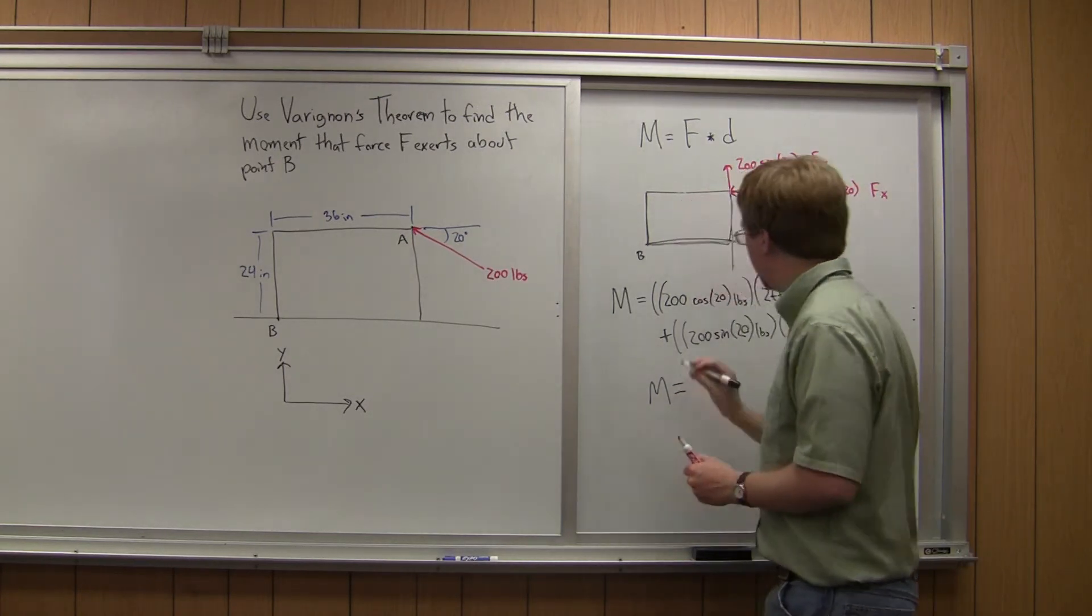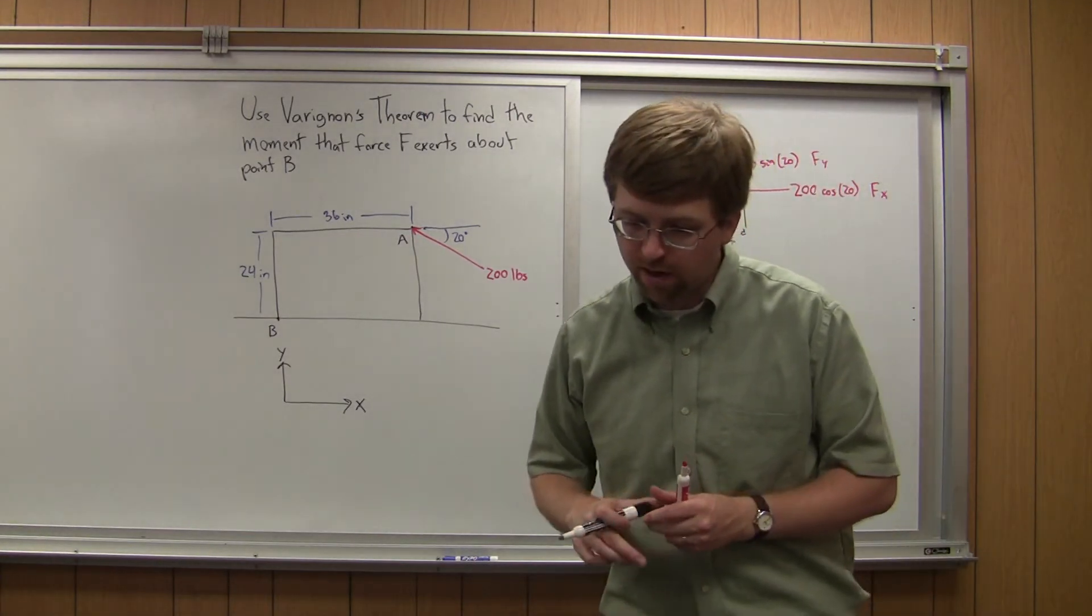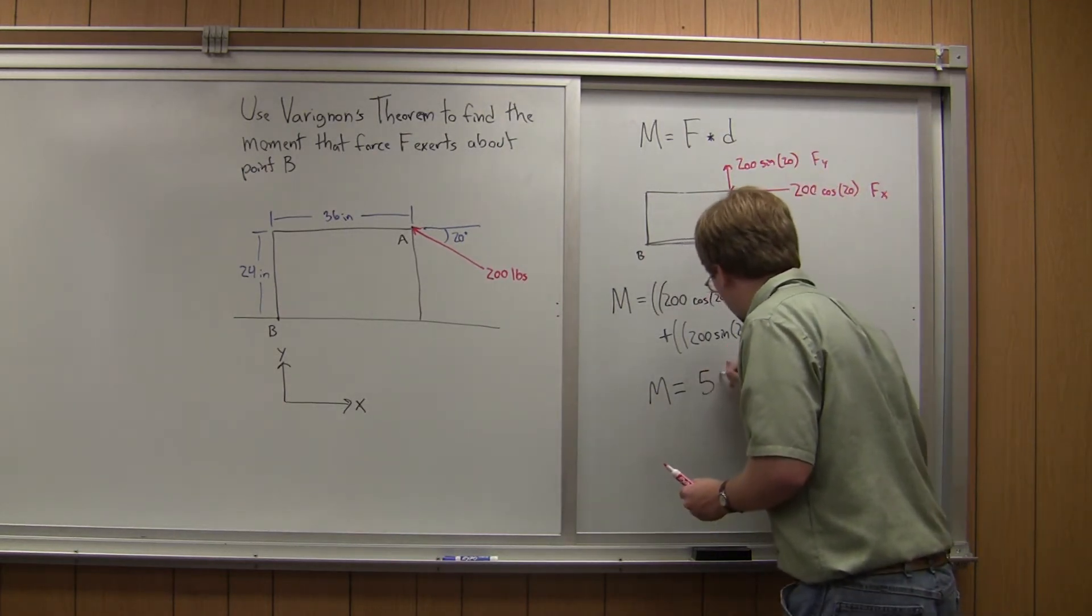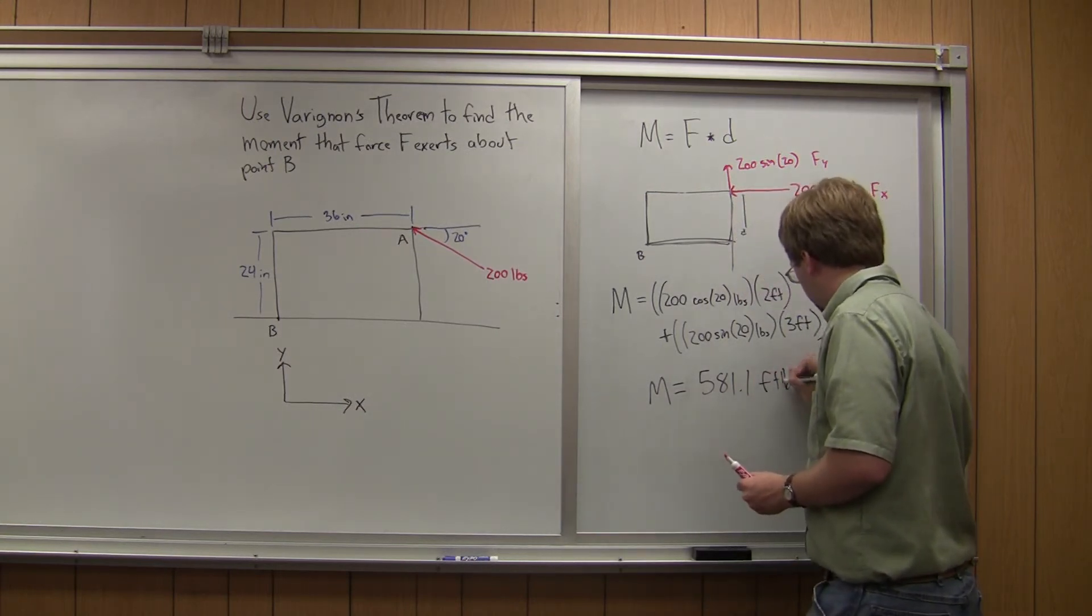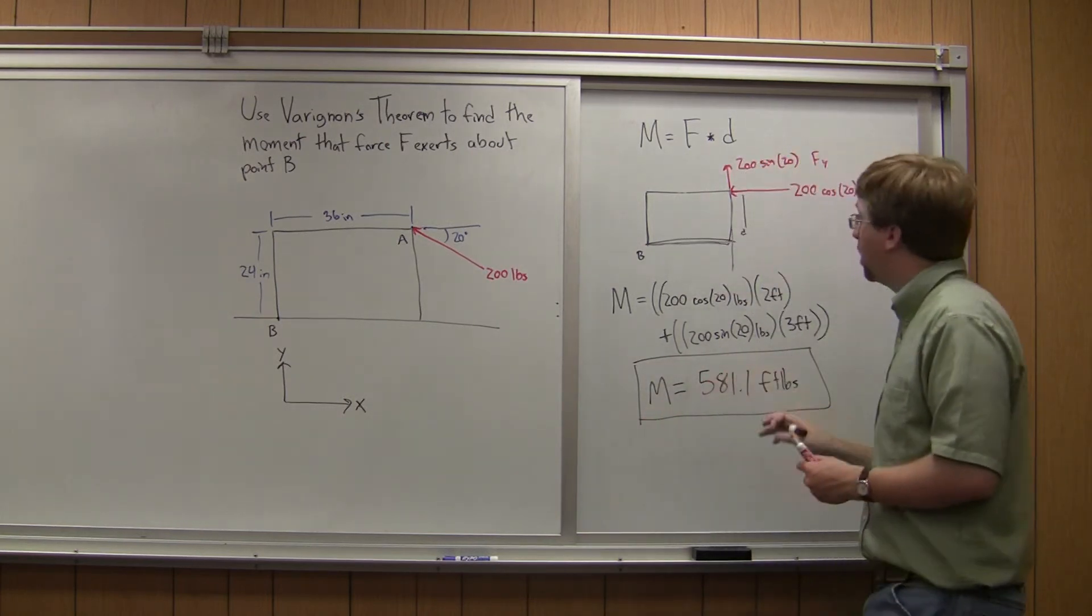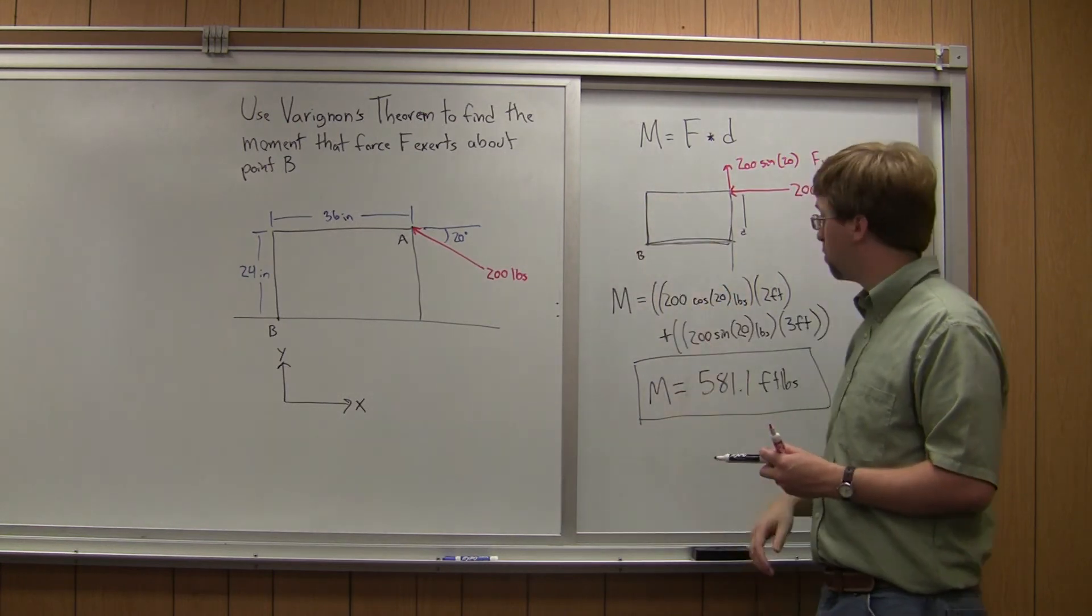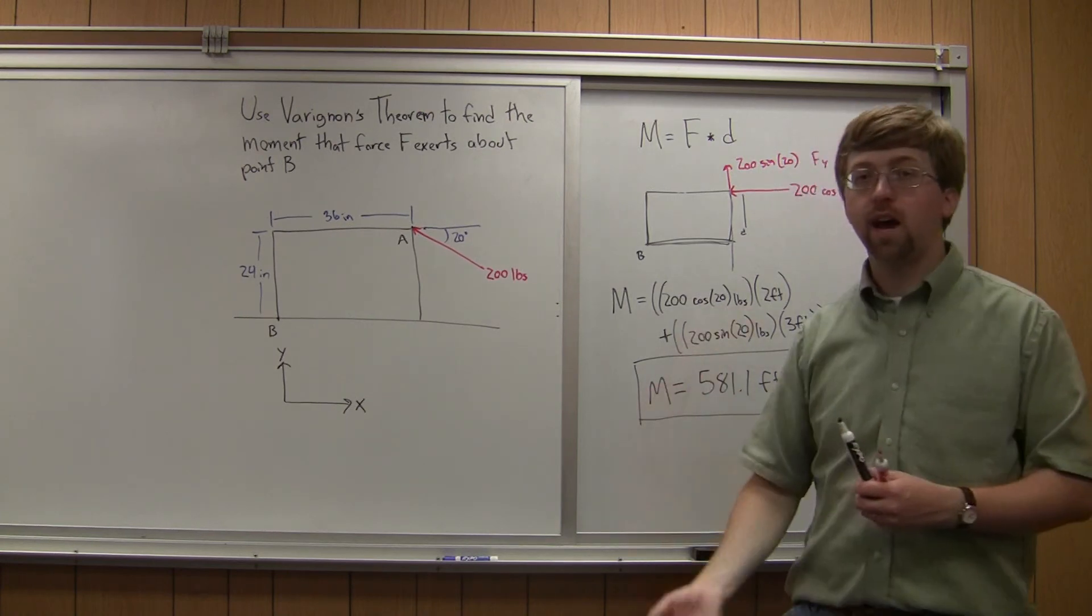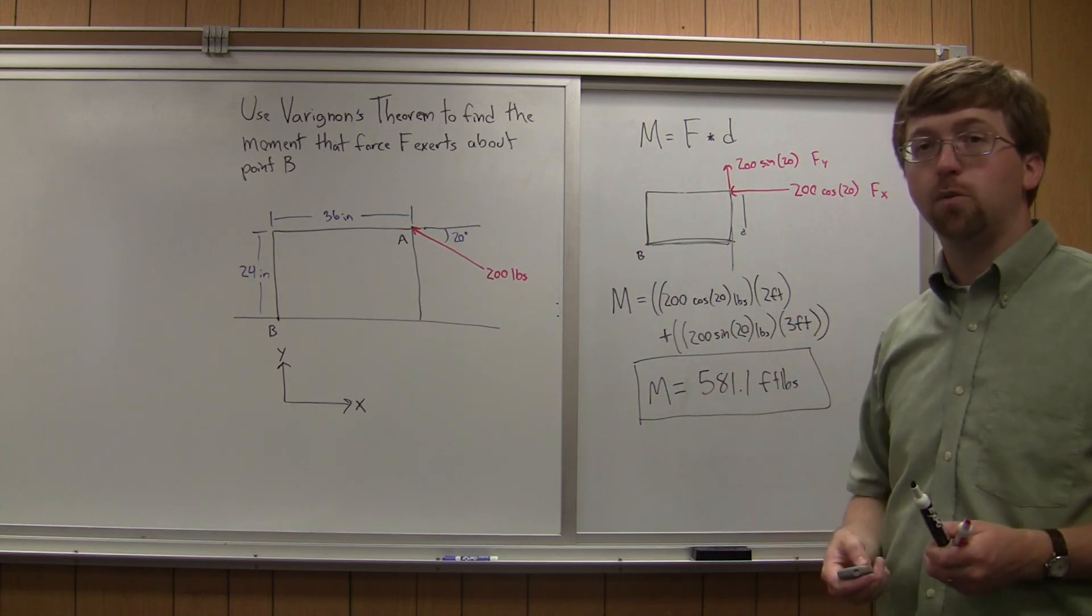And if I crunch the numbers and actually calculate all this out, I end up with a moment of about 581.1 foot-pounds. So that is a positive moment, which means it's a moment going in the counterclockwise direction, about point B, magnitude of 581.1 foot-pounds. So with that, we found our moment. Thank you for watching and hope to see you again.